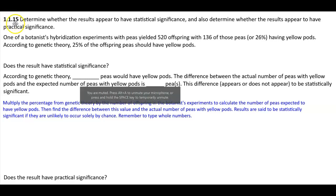Section 1.1.15. Determine whether the results appear to have statistical significance and also determine whether results appear to have practical significance. One of a botanist's hybridization experiments with peas yielded 520 offspring with 136 of those peas, or 26%, having yellow pods. According to genetic theory, 25% of the offspring peas should have yellow pods.